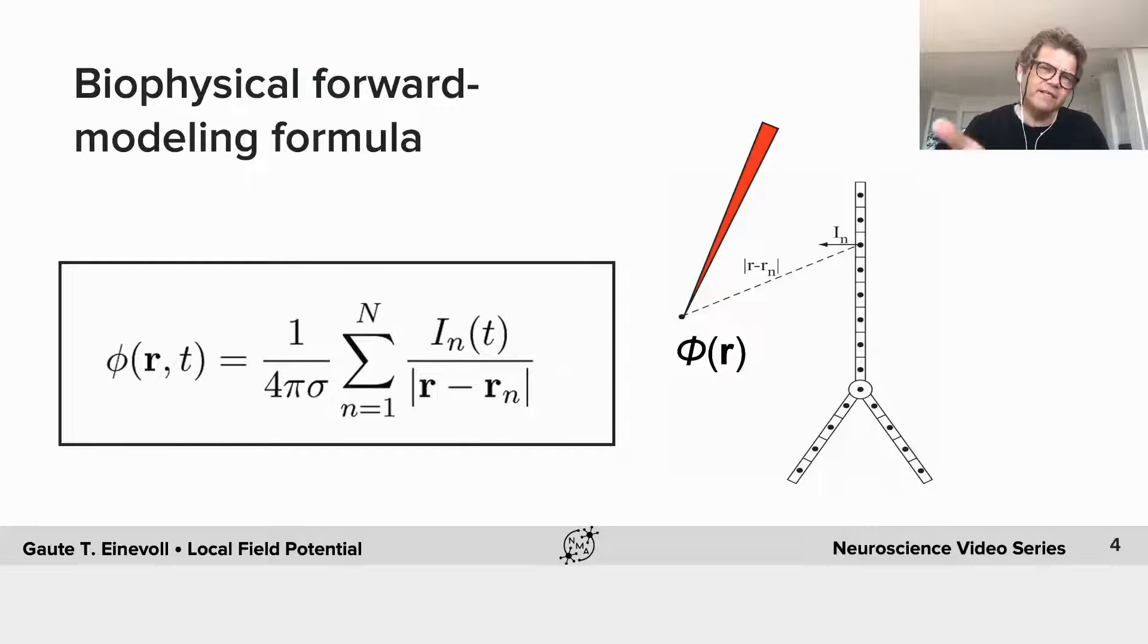And essentially this is the formula for the simplest situation, but you can also quite easily generalize this to situations where this extracellular conductivity is not constant. For example, when the signal propagates from a neuron up to the EEG electrode at the top of the scalp, where it has to go through skin and skull and all kinds of material with different extracellular conductivities.